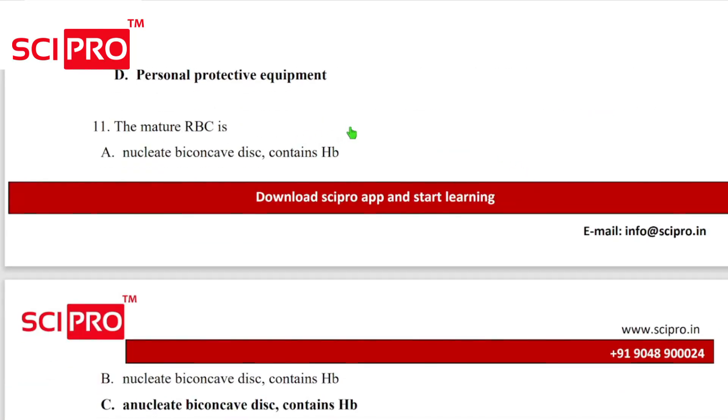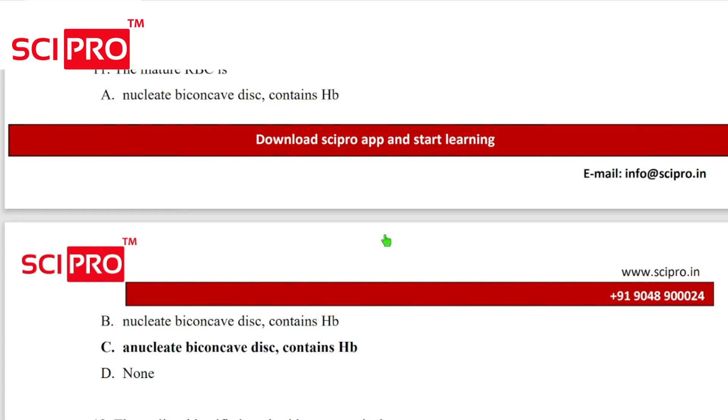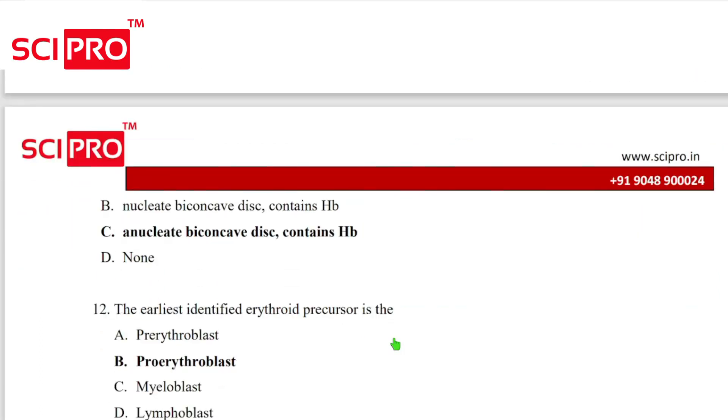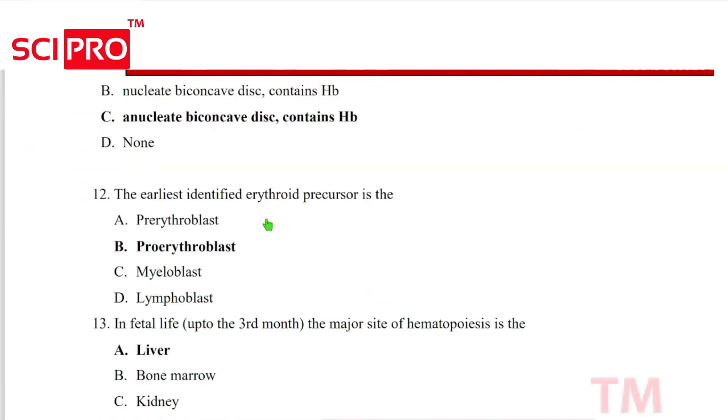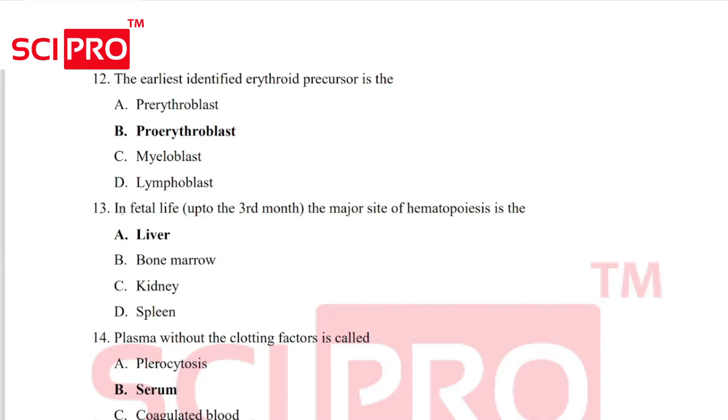Question number 11, the mature RBC is an enucleate biconcave disc and it contains hemoglobin. Question number 12, the earliest identified erythroid precursor is the proerythroblast. Question number 13, in fetal life up to the third month, the major site of hematopoiesis is liver.